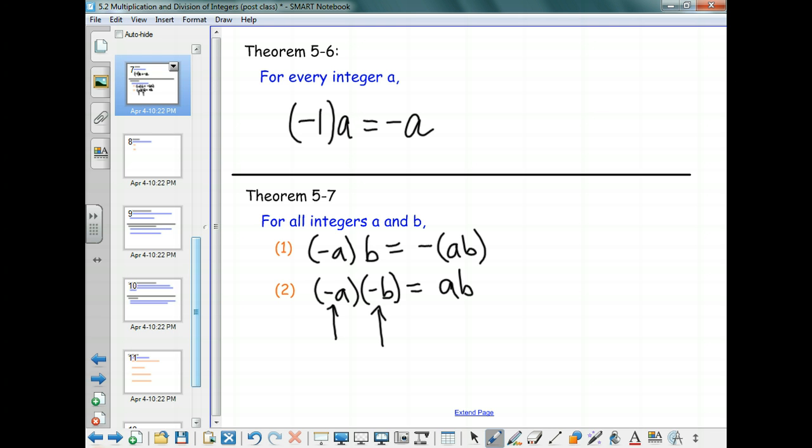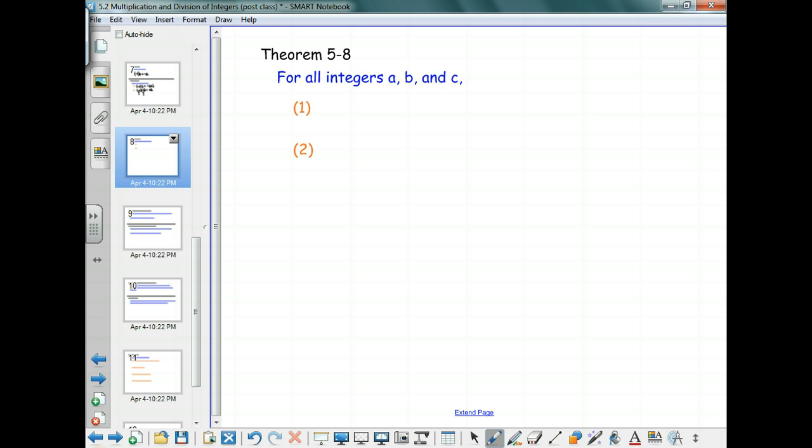And there's one more theorem that we're going to look at, and it has to do with distribution. If you have a times the quantity b minus c, what does that equal? It works the same way if I have the number behind the b minus c. I'll distribute these across here. We did this last time that we did with addition. So it doesn't matter whether the multiplication factor is at the end or at the beginning, because we have a commutative property that allows us to do it either way.